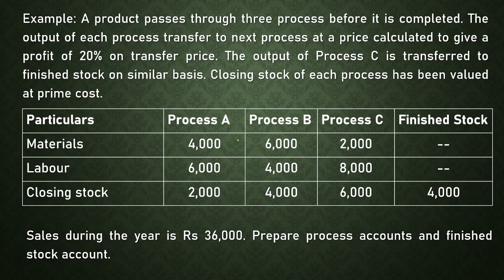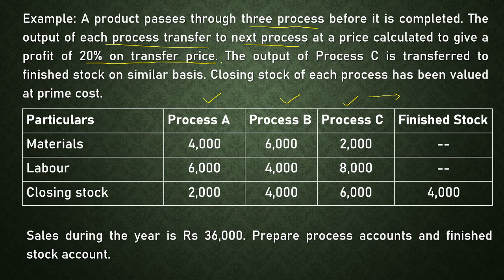Let's start. The product passes through three processes before completion — Process A, Process B, and Process C — and the output of Process C is transferred to finished stock account. The output of each process is transferred to the next process at a price calculated to give a profit of 20% on transfer price. Transfer price includes cost price plus profit, so the profit is on the transfer price, not on the cost price. The output of Process C is also transferred to finished stock on the same basis, meaning at 20% of transfer price.